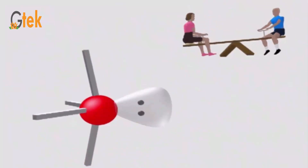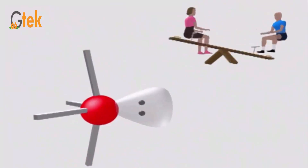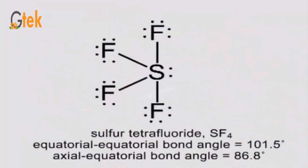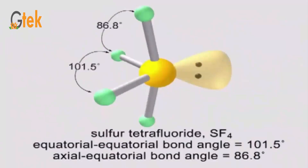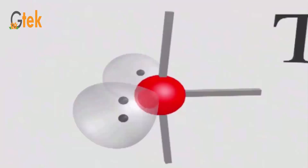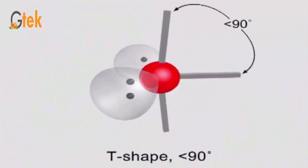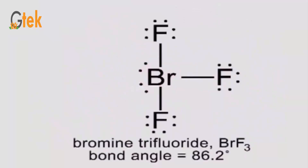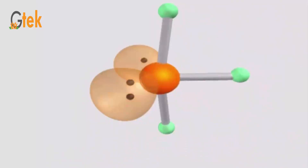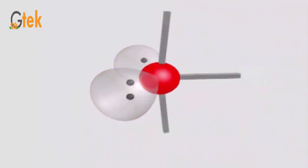When there is a lone pair of electrons, the equatorial bond angle is slightly less — about 120 degrees — and the axial angle is 90 degrees. Sulfur tetrafluoride has an equatorial bond angle of approximately 101.5 degrees. With more lone pairs, the shape becomes T-shaped with angles less than 90 degrees, about 86.2 degrees. The example is bromine trifluoride.